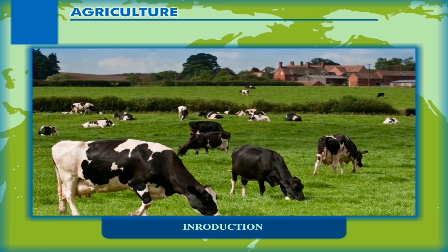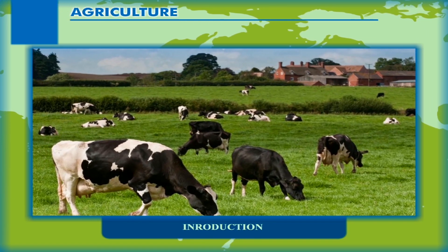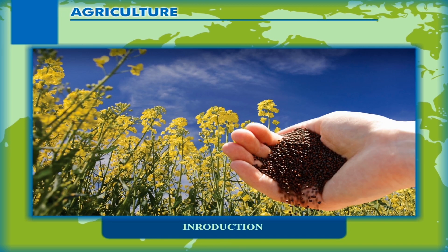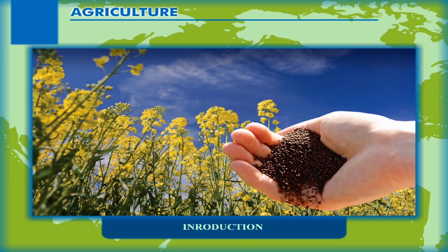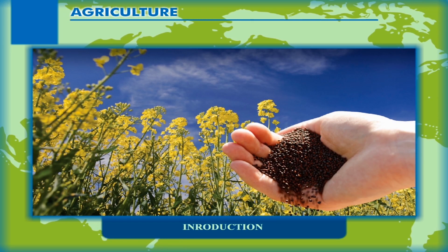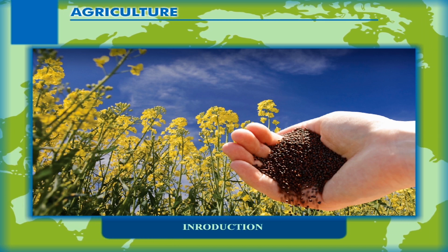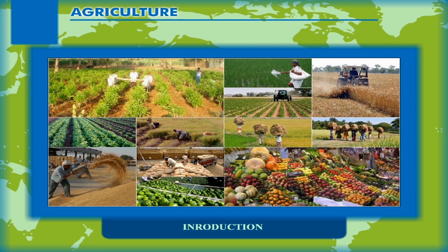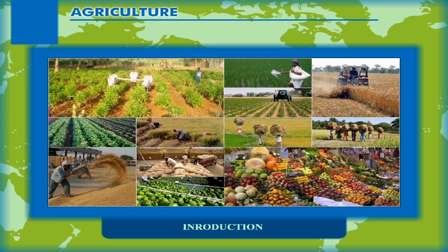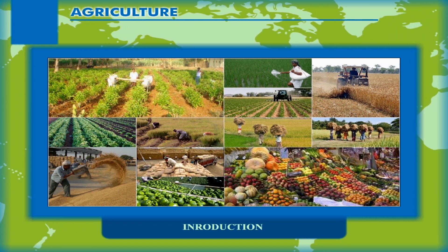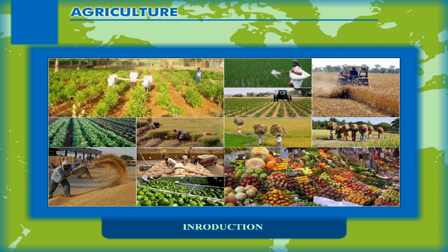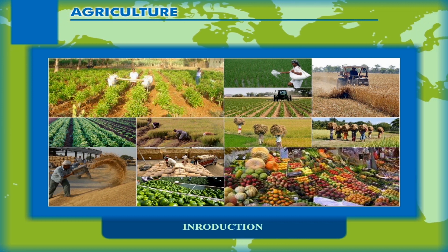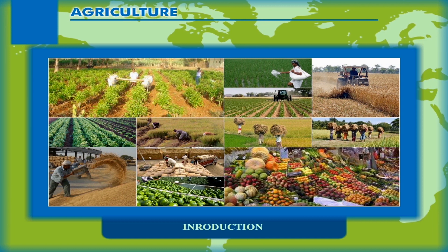Agriculture is one of the oldest activities of mankind. Agriculture is the most basic resource as it provides food, clothing, and shelter to mankind. Since time immemorial, the spread of agriculture in various parts of the world recorded progress from the use of most primitive implements to the most modern implements of today.